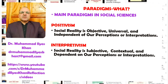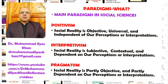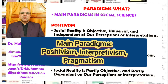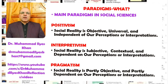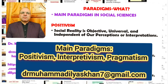Generally in social sciences, there are three main paradigms. The first is positivism, which is based on the philosophy that social reality is objective, universal, and independent of our perception or interpretation. Objectivity, universality, and independence of social reality represent positivism as a research paradigm.